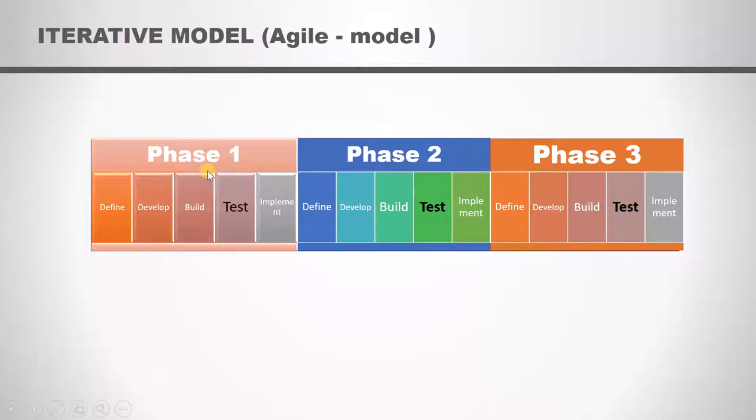We have 15 requirements, so we decide to develop five requirements in phase 1, five in phase 2, and five in phase 3. At the end of the three weeks, we will have all 15 requirements.